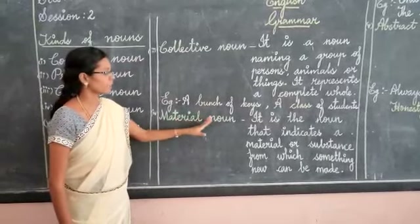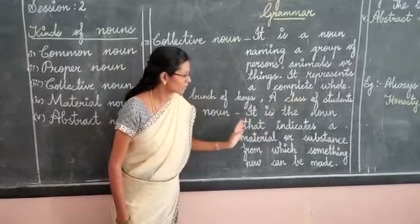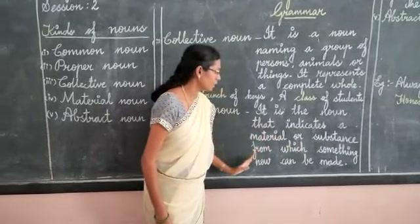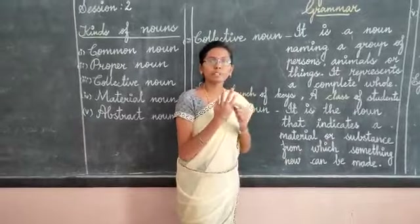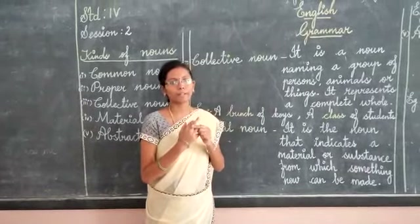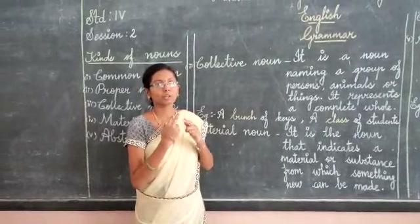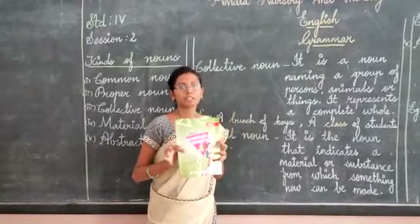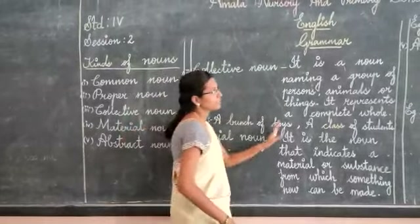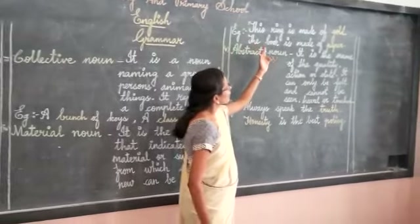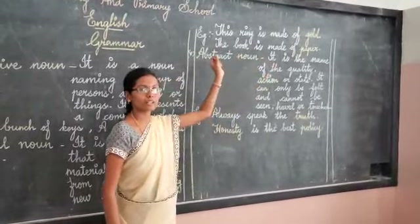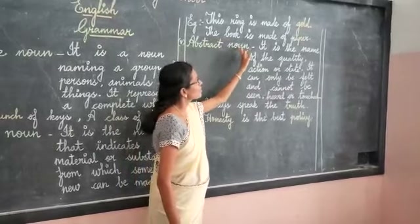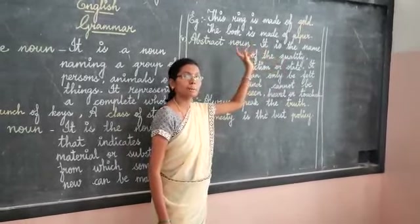Shall we go to see the material noun? What is material noun? It is a noun that indicates a material or substance from which something new can be made. See my finger — I have here one kind of metal. How is it made? This is made of gold. So gold is the material noun here. Another example: I have one book. How is it made? It is made up of paper. So paper is a material noun. The ring is made of gold — gold is the material noun. The book is made of paper — paper is the material noun.